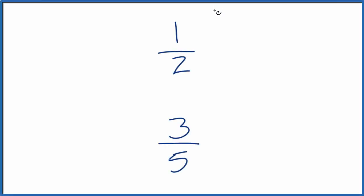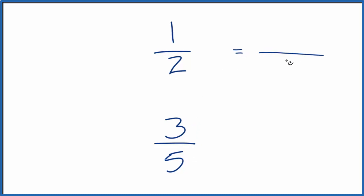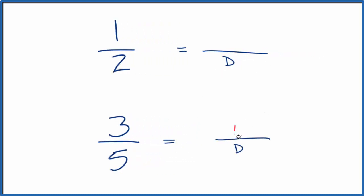Let's take a quick look at which fraction is larger: 1 half or 3 fifths. So is 1 divided by 2 greater than 3 divided by 5? There are two ways we could do this. If we could get a common denominator, then we could compare the numerators and figure out which fraction is larger, 1 half or 3 fifths.